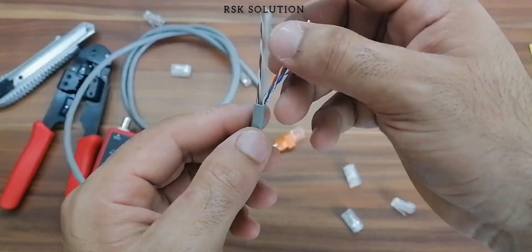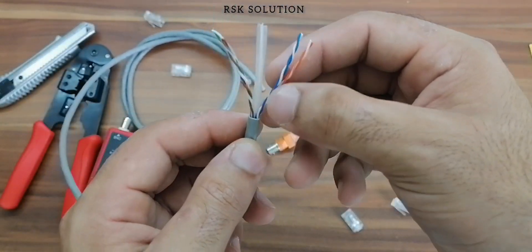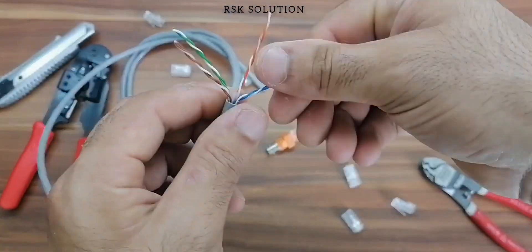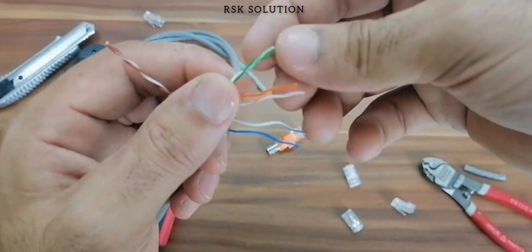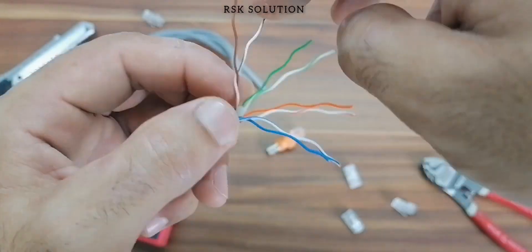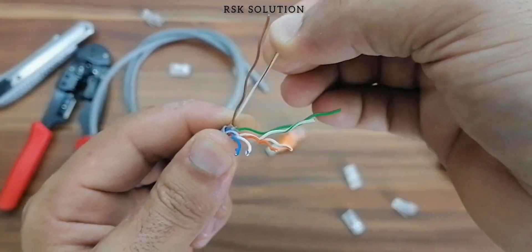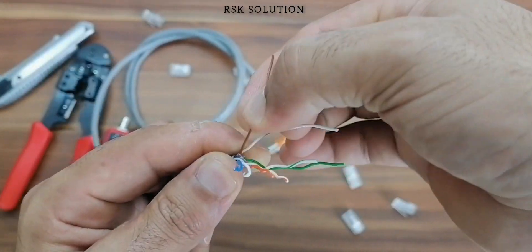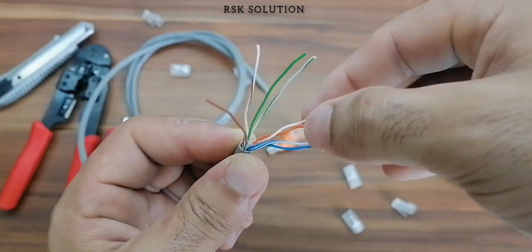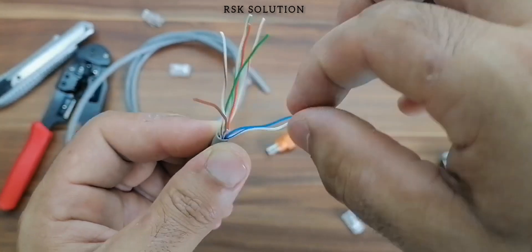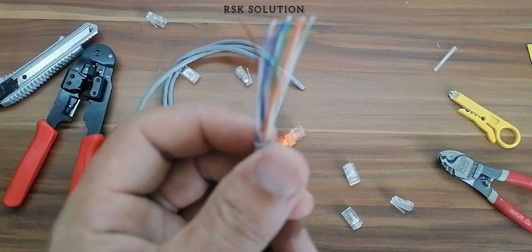As you can see we have 4 pairs and 8 wires inside and also we have wire separator. We cut the separator from inside and separate each wire and then you can pull it one by one to make them straight.